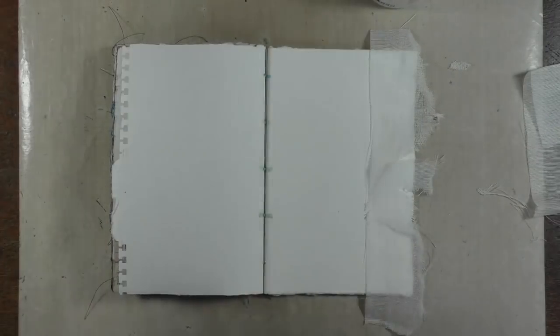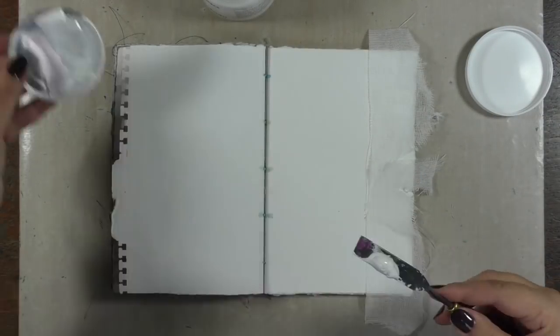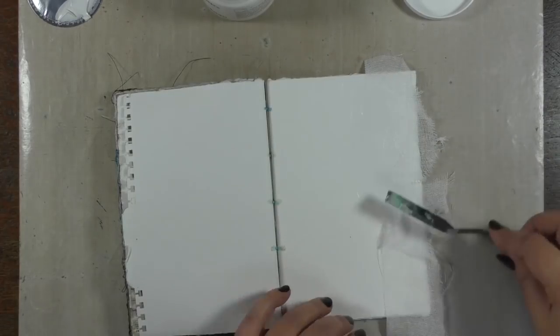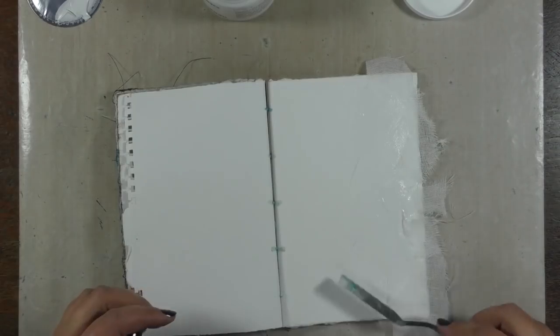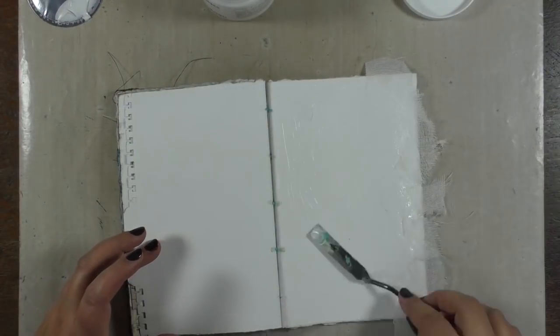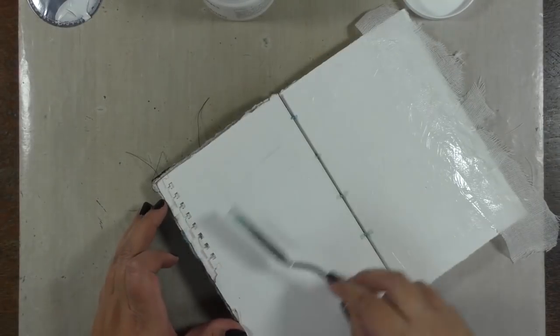To hold my cambric in place, I'm going to use this new modeling paste that I got, which is the hard modeling paste from Golden. It's a bit thicker than a regular modeling paste that you might use. Simply scraping it on using a palette knife.